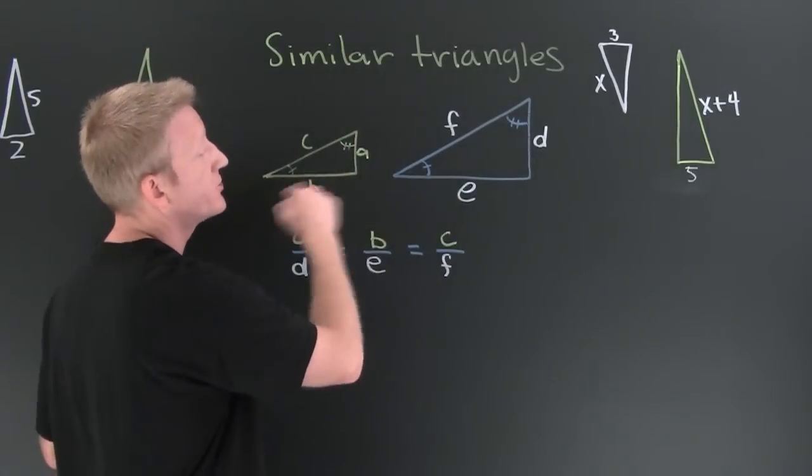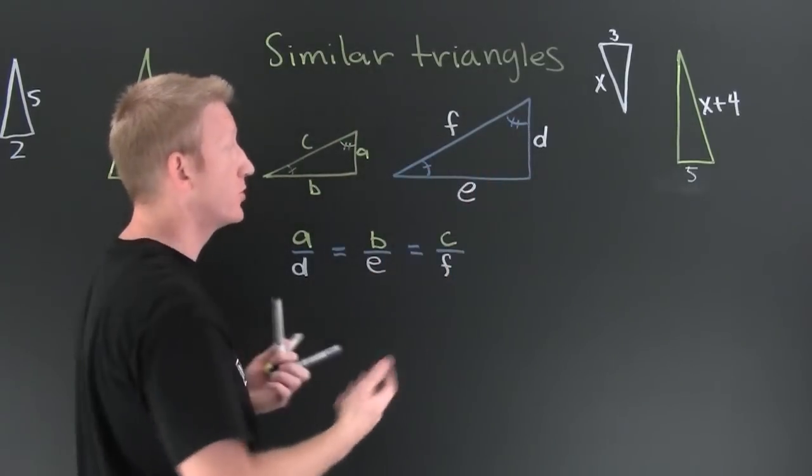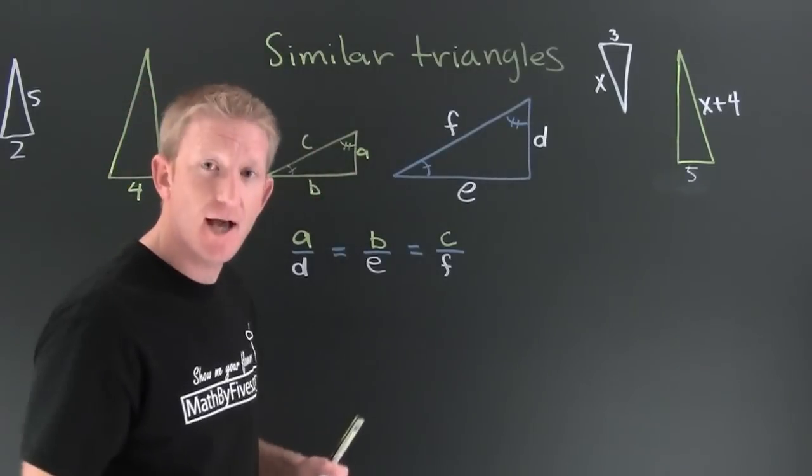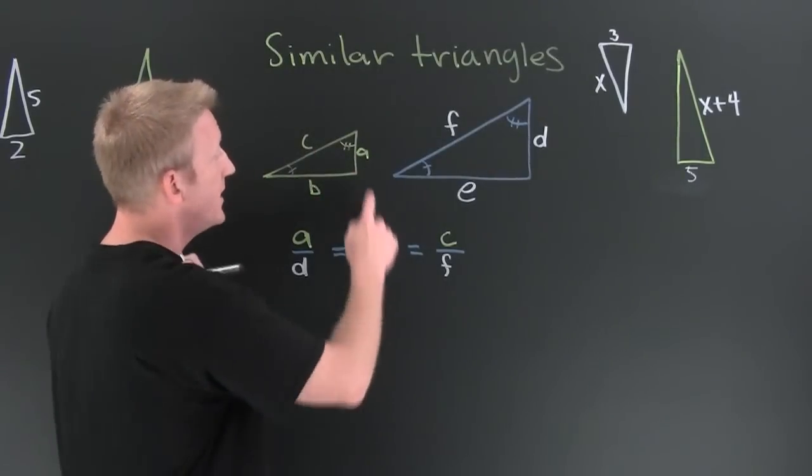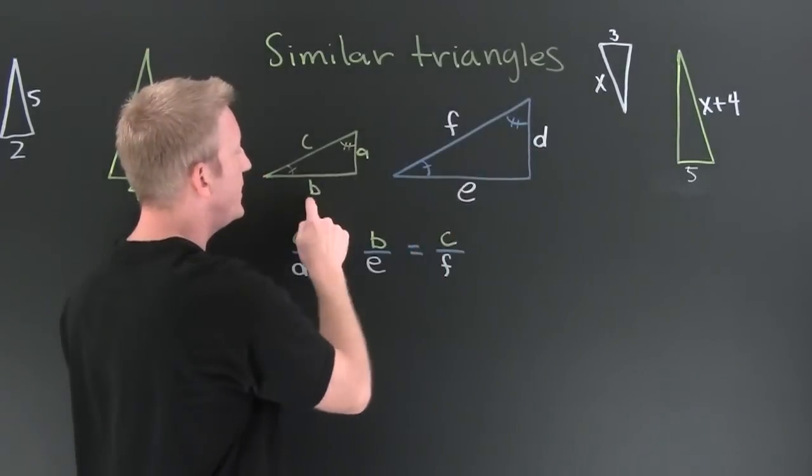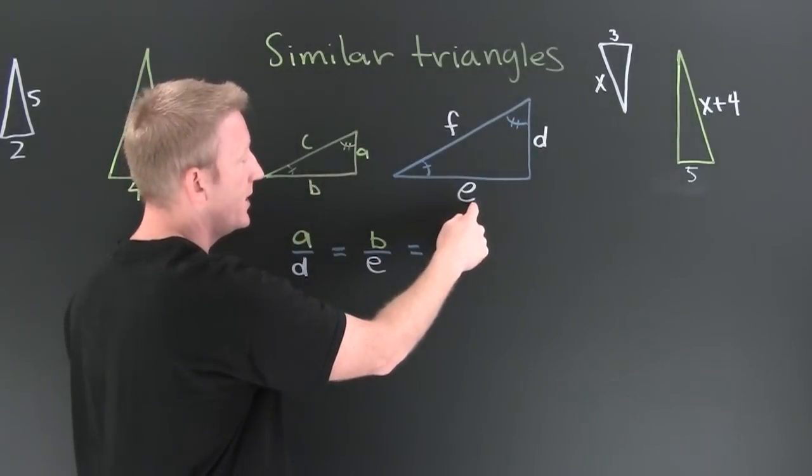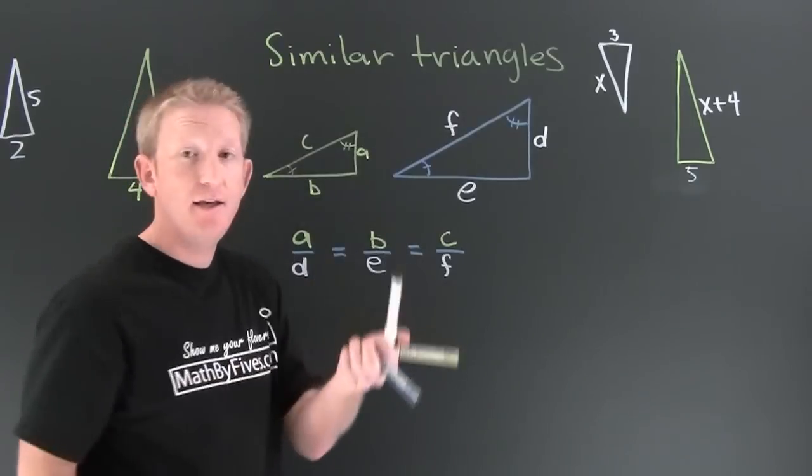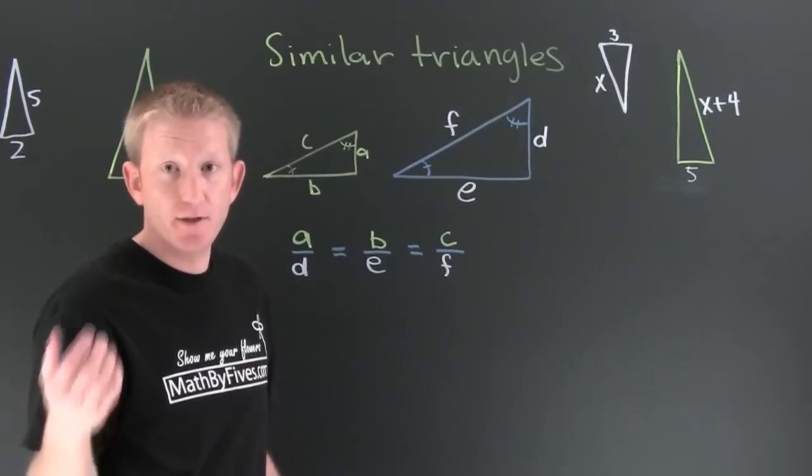similar triangles? Similar triangles have corresponding angles equal, and when that happens the sides are in proportion. It says that a is to d as b is to e as c is to f. What does that say? If you know the two triangles are similar you can set